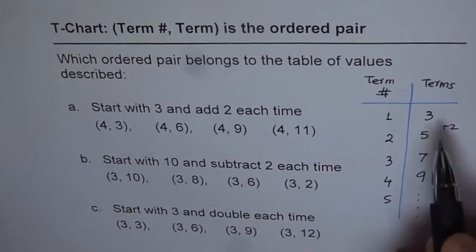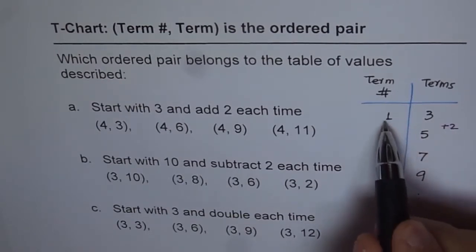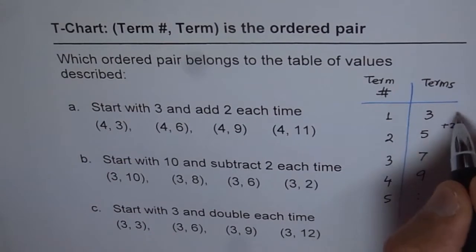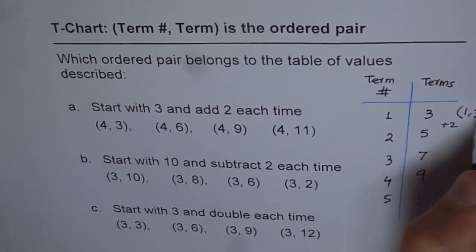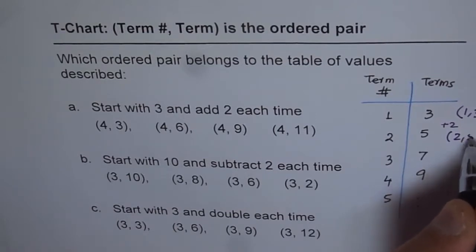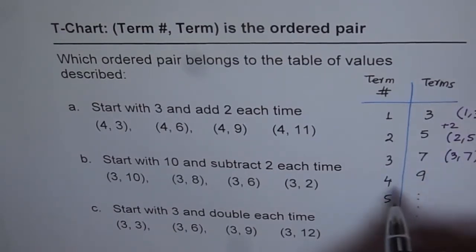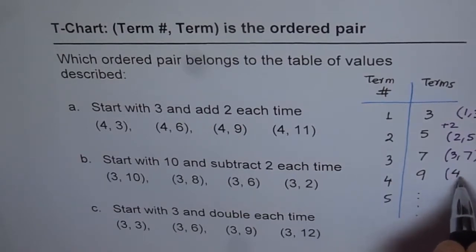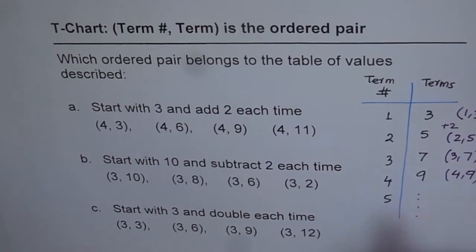And in this, ordered pairs are like 1, 3. So I will write this ordered pair as 1, 3. I will write this ordered pair as 2, 5. And the next one will be 3, 7. And this will be 4, 9. So it really means that term number 4 is 9.